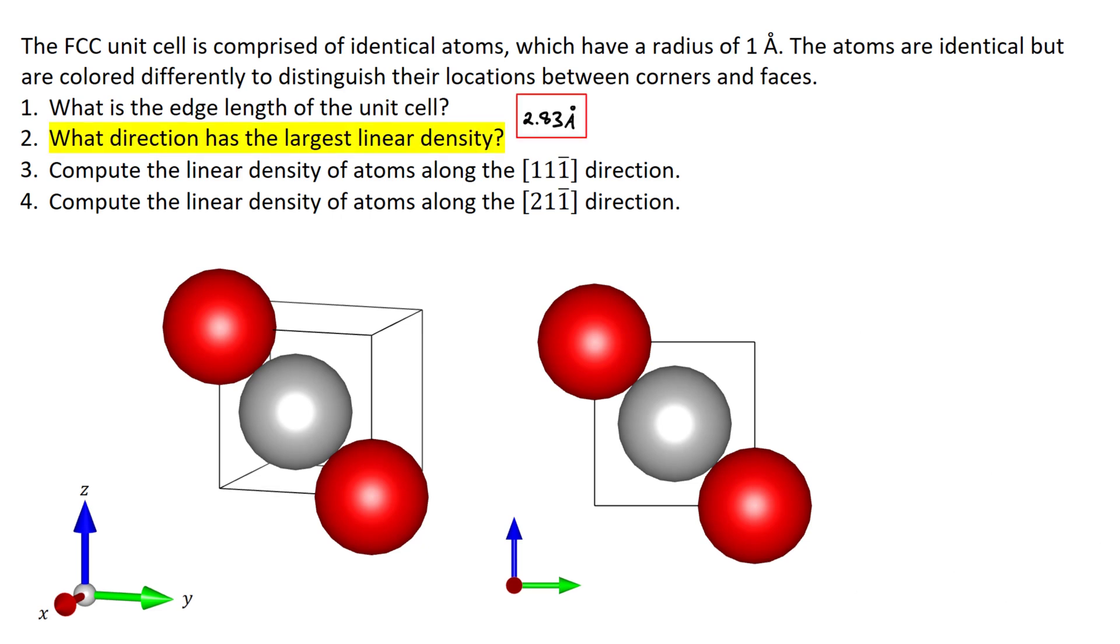The next question asks what crystallographic direction has the largest linear density. There's a number of answers to this question. The thing to think about is that the highest linear density would be a case in which the atoms are touching. We see that occurring on the diagonals of each face of the cube.